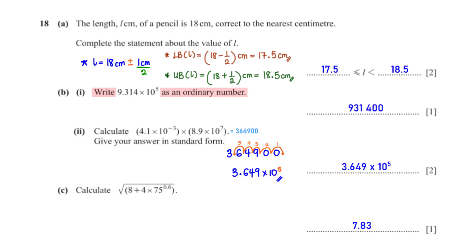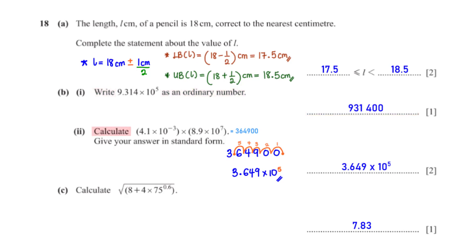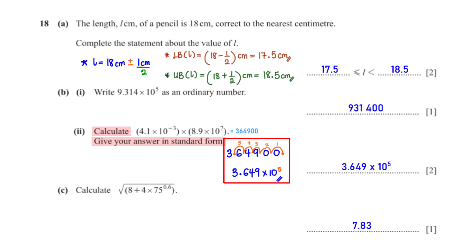Write 9.314 × 10⁵ as an ordinary number. Typing it into the calculator gives 931,400. Calculate (4.1 × 10⁻³) × (8.9 × 10⁷); give your answer in standard form. The calculator gives 364,900. Moving the decimal point after the first non-zero digit gives 3.649, and since we moved 5 places left, the answer is 3.649 × 10⁵.